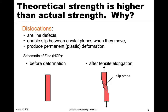Dislocations, as you recall from the defects chapter, are line defects — one-dimensional — and they enable slip between crystal planes as they move, resulting in permanent or plastic deformation. The example we give is a zinc bar: before deformation it has a certain shape, and if we apply a tensile stress it will elongate. We get plastic deformation at very specific planes, producing step formations. When unloaded, this slip is permanent — the elastic portion recovers but the plastic deformation from dislocations does not.